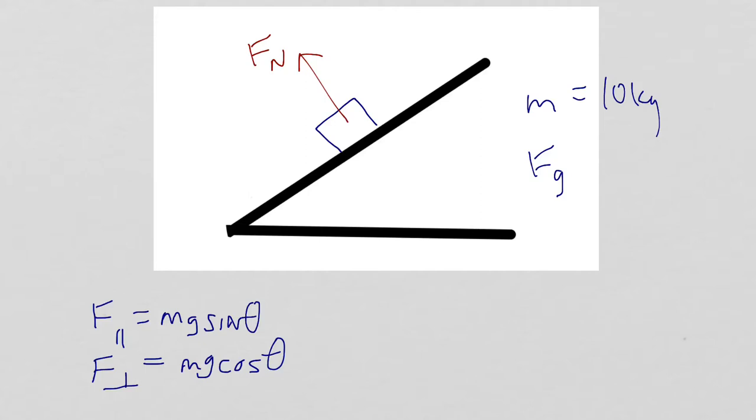So, what happens is, here is my weight vector, Fg, pointing towards the center of the earth, but now I have to break up this vector into two components. And the reason being is that my object is on an incline.